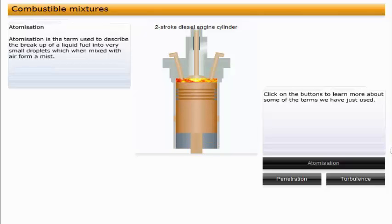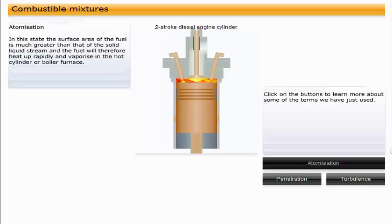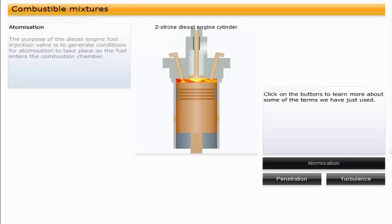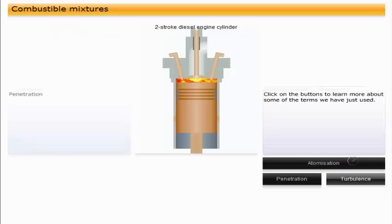Atomization is the term used to describe the breakup of a liquid fuel into very small droplets, which when mixed with air form a mist. In this state, the surface area of the fuel is much greater than that of the solid liquid stream, and the fuel will therefore heat up rapidly and vaporize in the hot cylinder or boiler furnace. The purpose of the diesel engine fuel injection valve is to generate conditions for atomization to take place as the fuel enters the combustion chamber. Similarly, a boiler burner tip will help create the conditions for atomization, often using compressed air or steam to assist the process.